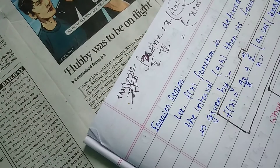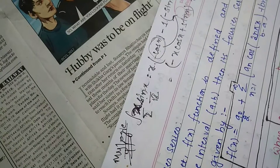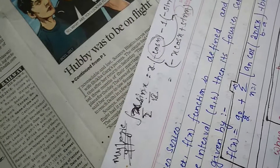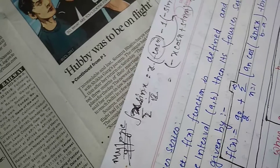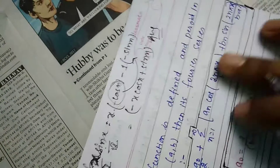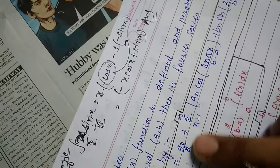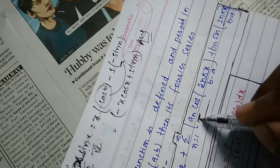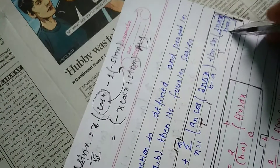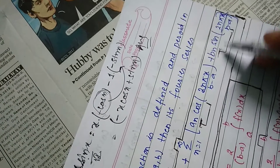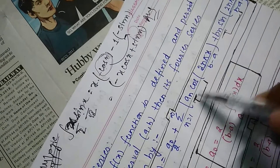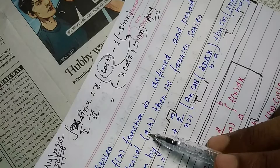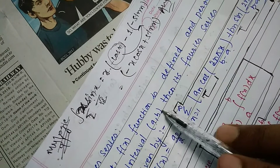Now coming to Fourier series — the basic function concepts covered previously are the prerequisites. If f(x) is defined and periodic in the interval a to b, the Fourier series is: f(x) = a₀/2 + summation from n=1 to infinity of [aₙ·cos(2nπx / (b-a)) + bₙ·sin(2nπx / (b-a))], where a and b are the start and end of the interval.